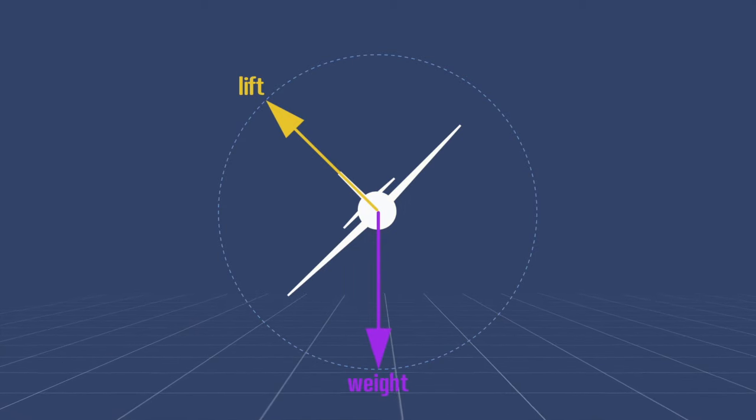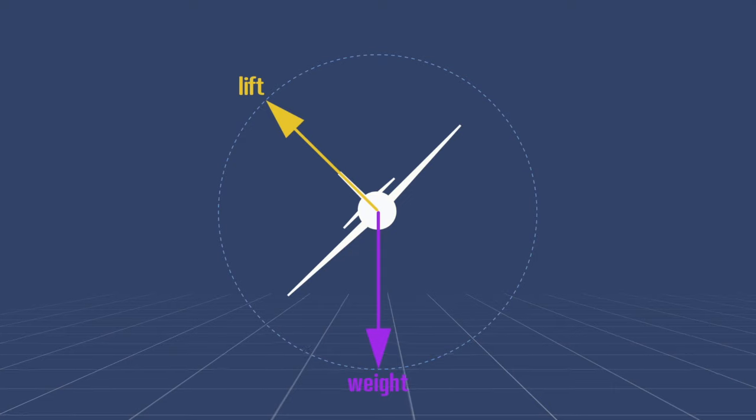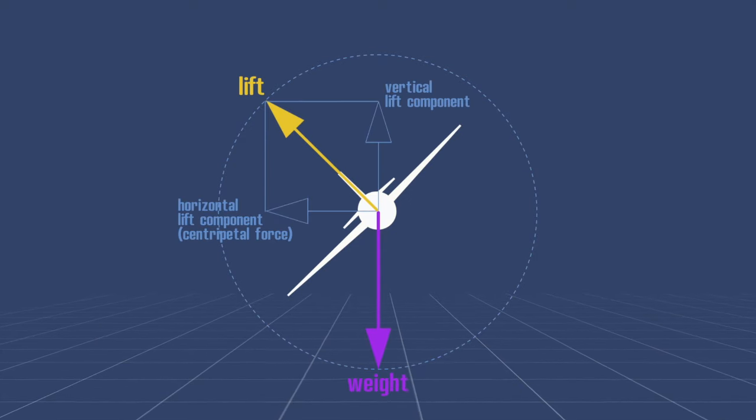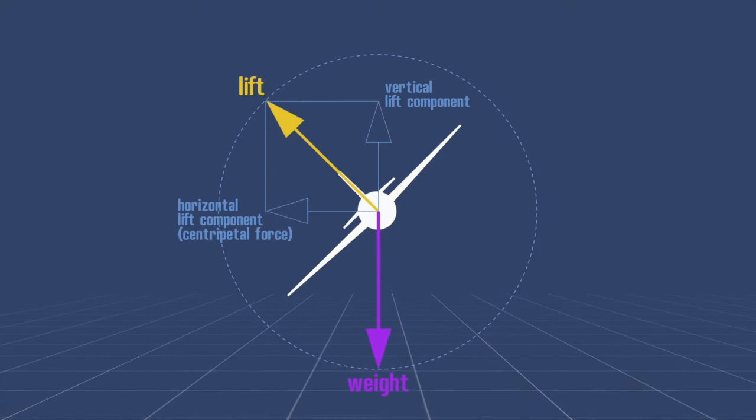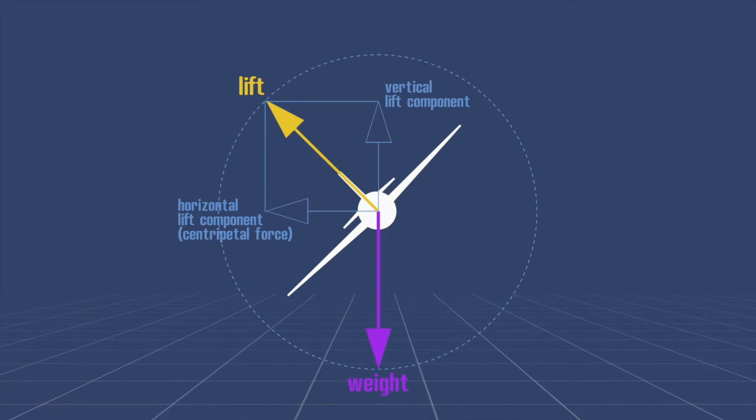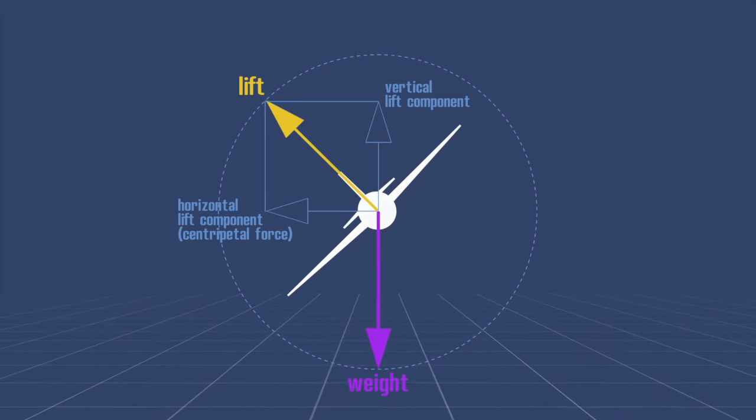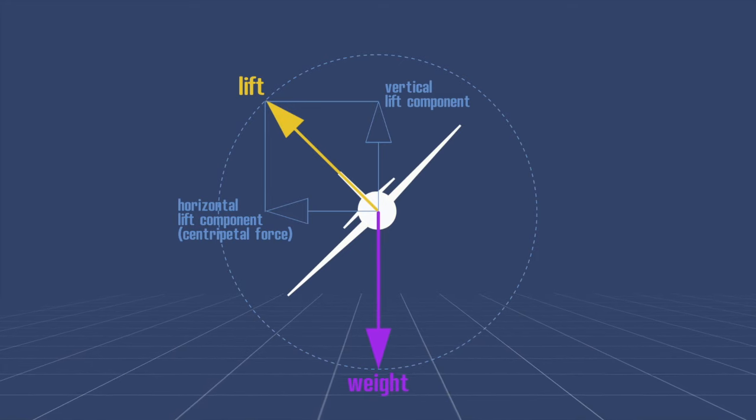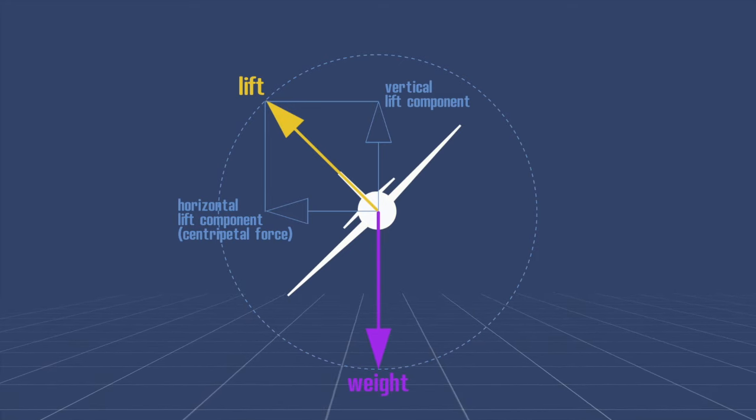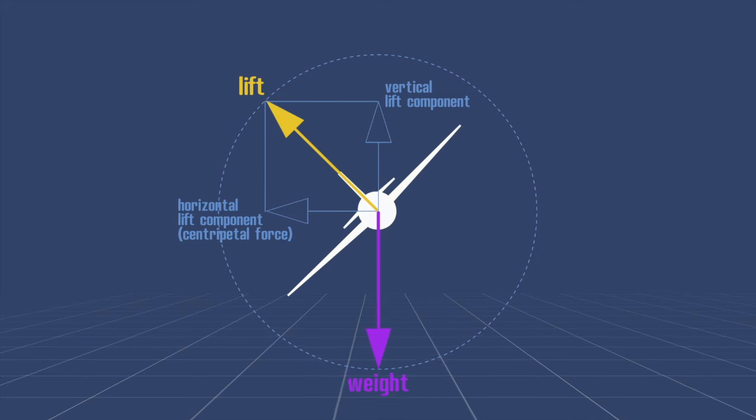The lift force can now be broken down into two components. The vertical lift component that opposes weight, and the horizontal lift component that pulls the aeroplane into the turn. The horizontal component of the lift force is the aeroplane's centripetal force.